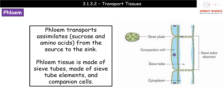The second type of tissue we need to know about is phloem. Phloem transports assimilates — such as sucrose and amino acids — and these move from the source to the sink. Use that phrase: from source to sink. This movement could be either up or down the plant, so we have two-directional travel in the phloem. Phloem tissue is made up of sieve tubes, which consist of sieve tube elements and companion cells.